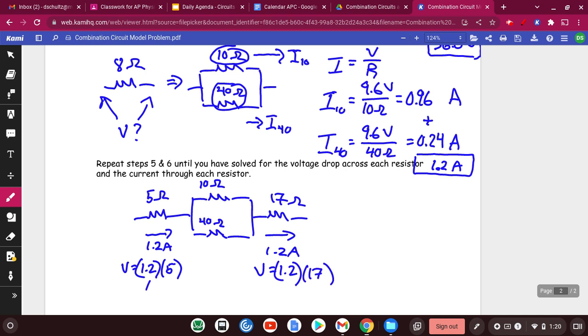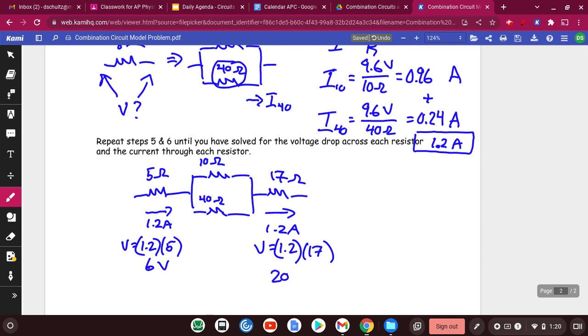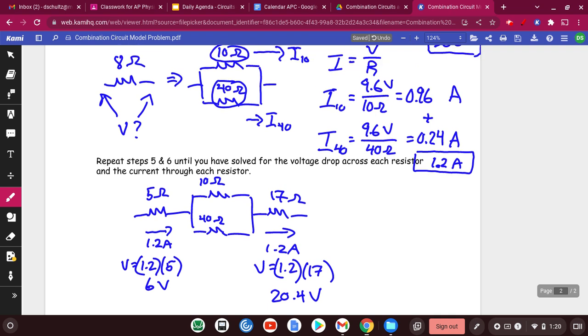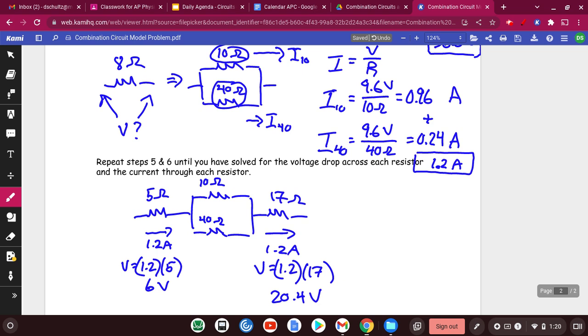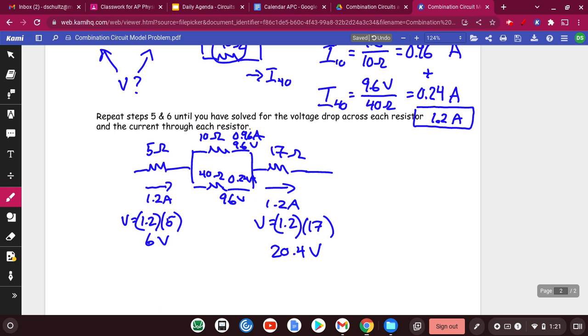So this one was going to be 6 volts. The other one was 20.4 volts. And then in terms of the 10 ohm and the 40 ohm, we already figured out here that you've got 0.96 amps, you've got 0.24 amps. And then both of these guys get the same voltage of 9.6 volts. That's pretty much everything that you can know about the circuit.